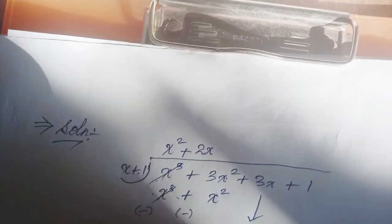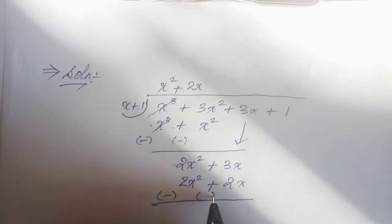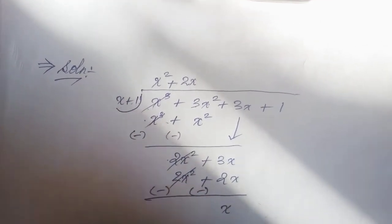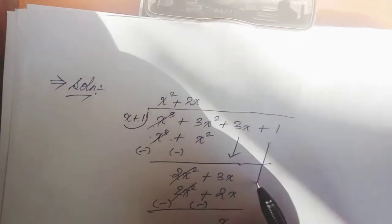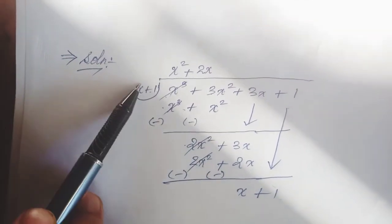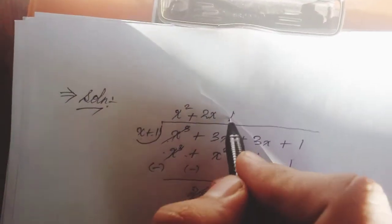Minus, minus cancels, so 2x plus 3x equals x plus 1. Now x plus 1, x multiplied by 1 equals x, plus 1 multiplied by 1 equals plus 1.